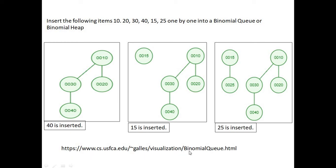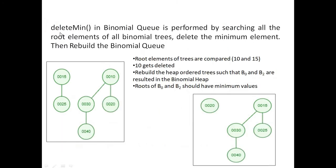The animation is available at this website. When we perform the delete min operation in the binomial queue, the root elements are compared, the minimum element gets deleted, and the resulting elements are rebuilt into new binomial trees. In this case, 10 and 15 are compared, 10 gets deleted, so 15 forms the root of the new b2 binomial tree and 20 is separated out.